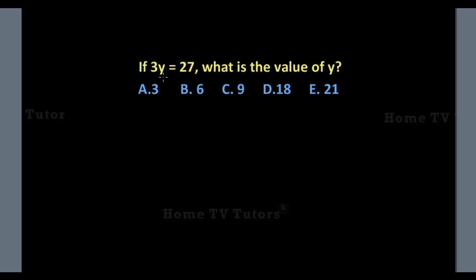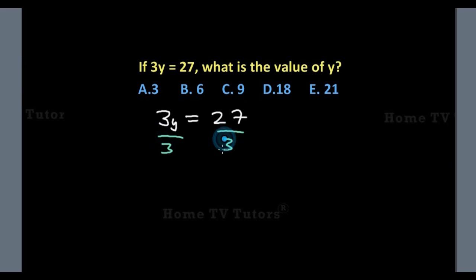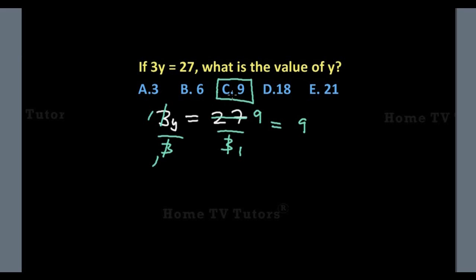If 3Y equals 27, what is the value of Y? We simply divide both sides by 3. On the left-hand side, 3 divided by 3 gives 1. On the right-hand side, 3 goes into 27 to give us 9. So the value of Y is 9. The answer option C is the right answer.